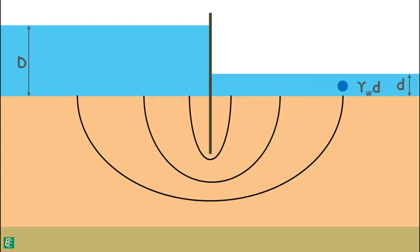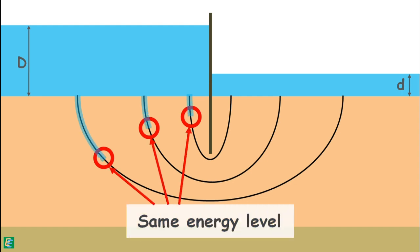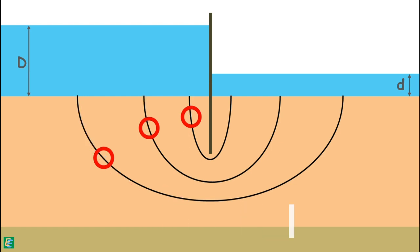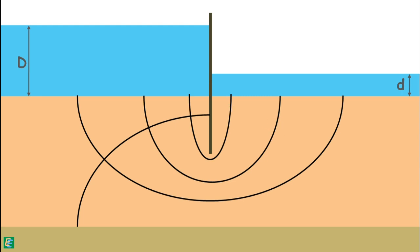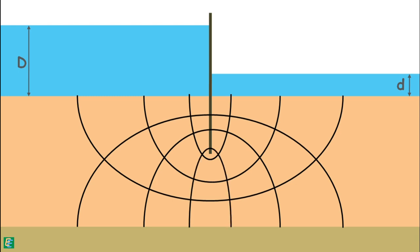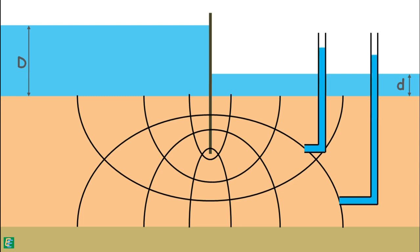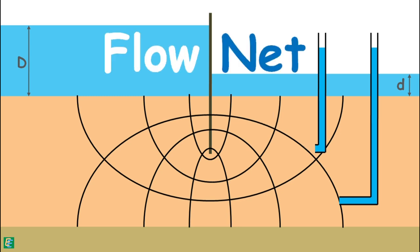We can pick certain points on different flow lines where the total energy lost is equal — points of the same energy level. When we join such points together, the line formed is an equipotential line. Similarly, many such equipotential lines can be drawn. If we insert piezometers into the soil at different points along an equipotential line, we will notice water rises to the same elevation in all the piezometers. We can see we have received our flow net.